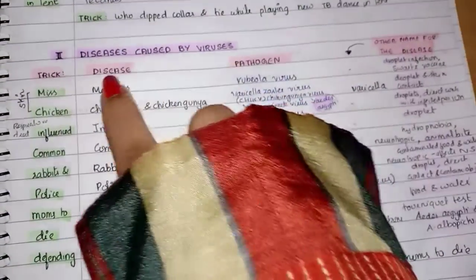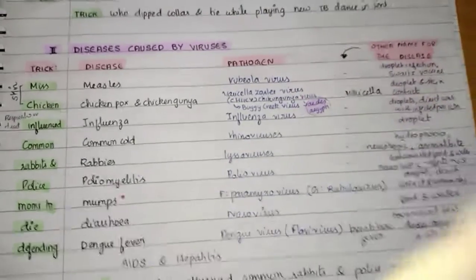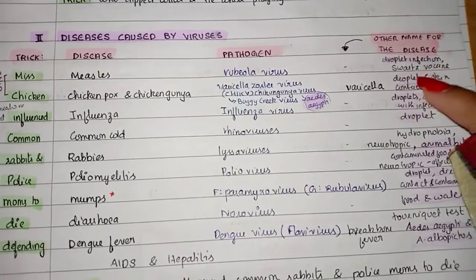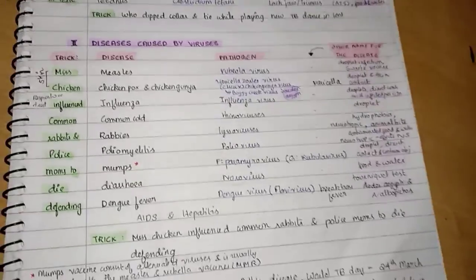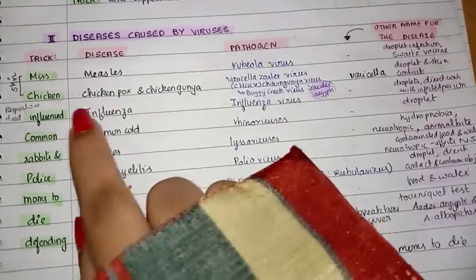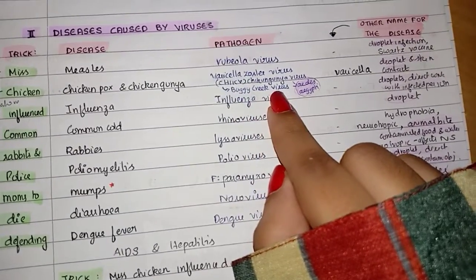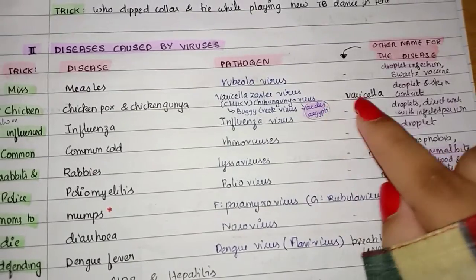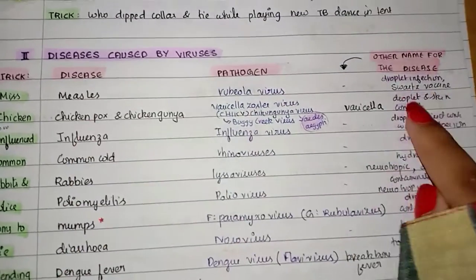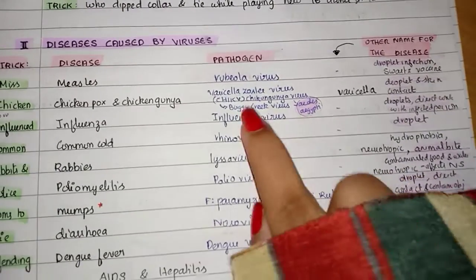For measles, the pathogen is Rubella virus; no other name; spread by droplet infection; vaccine is Schwartz vaccine. For chicken pox, the pathogen is Varicella zoster virus; other name is varicella; spread by droplet and skin contact. For chikungunya, the virus is Buggy Creek virus; spread by Aedes aegypti mosquito.